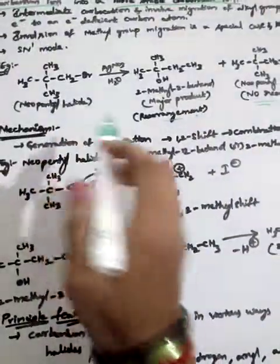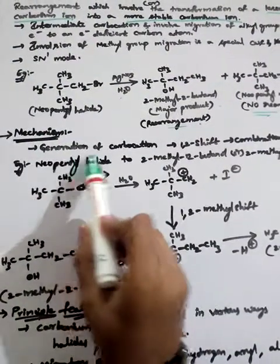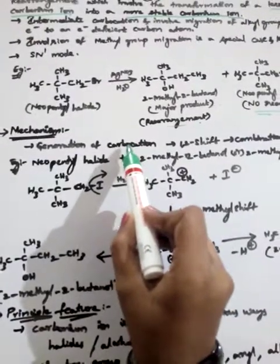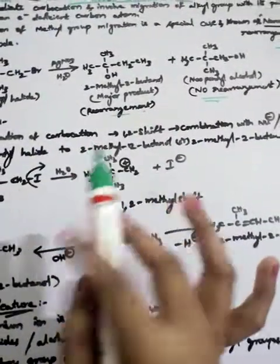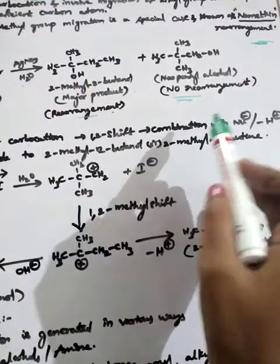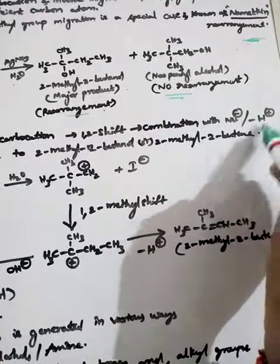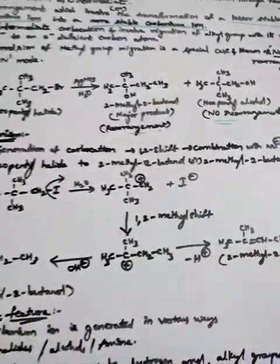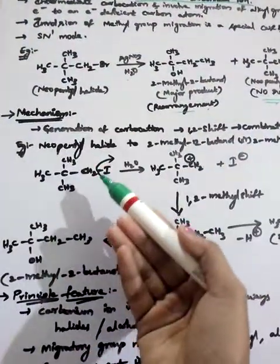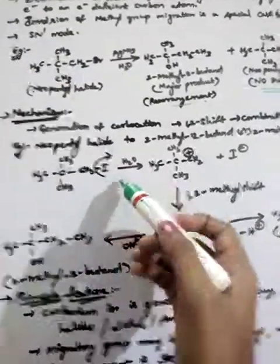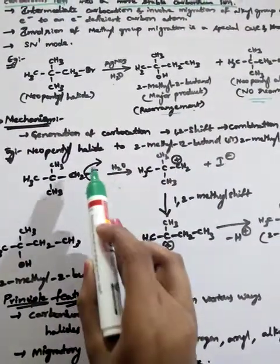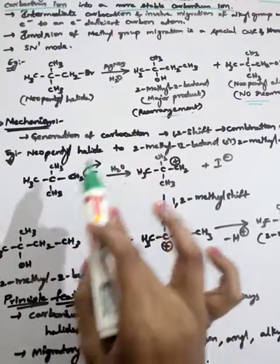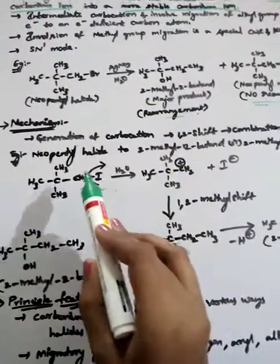The mechanism takes place in three steps. The first step is generation of a carbocation. The second step is a 1,2-shift — we have also seen this 1,2-shift in pinacol-pinacolone rearrangement. Taking neopentyl iodide as the example, in the presence of water, iodide is removed as I⁻ and a carbocation is formed.